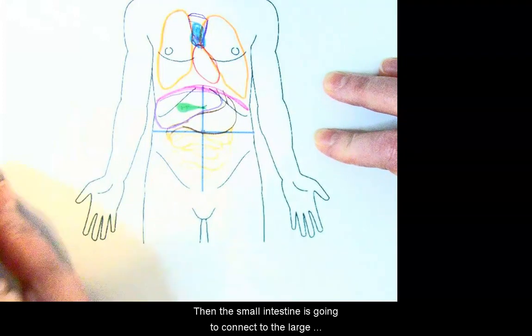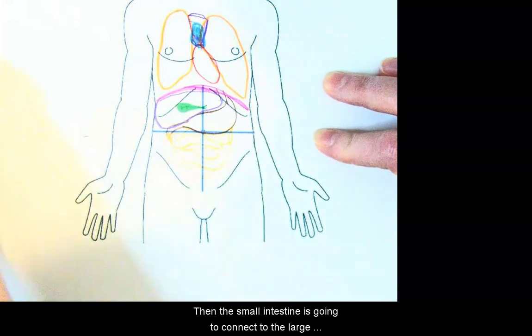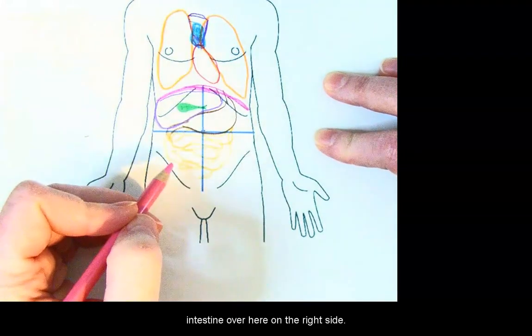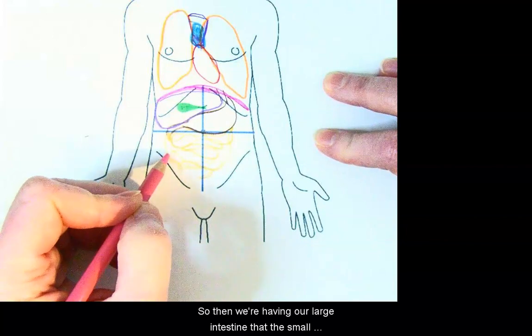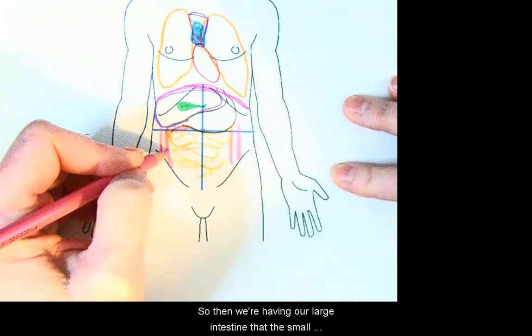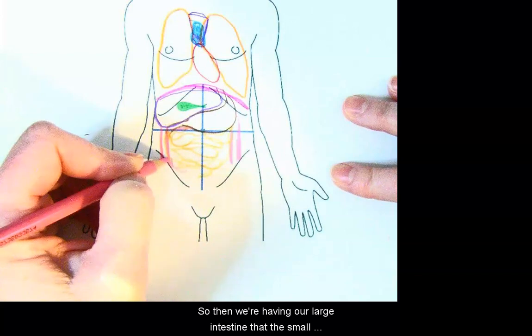Then the small intestine is going to connect to the large intestine over here on the right side. So then we're having our large intestine that the small intestine connects to.